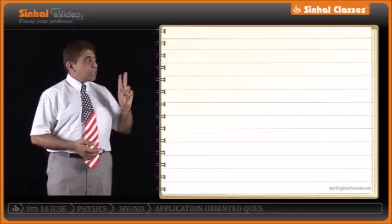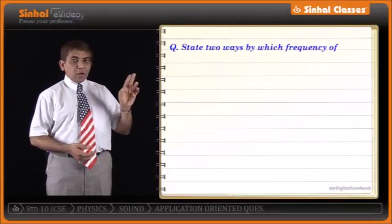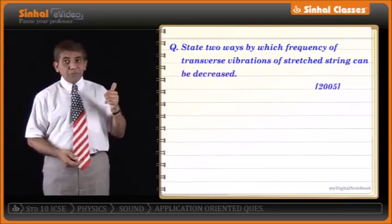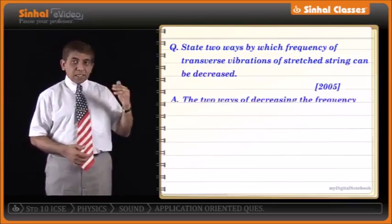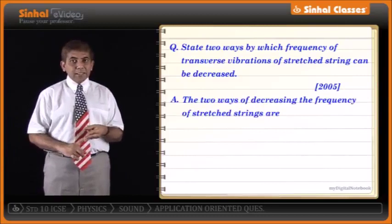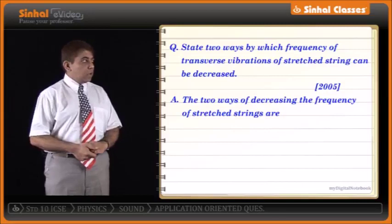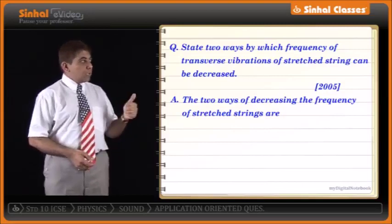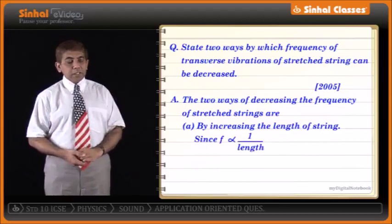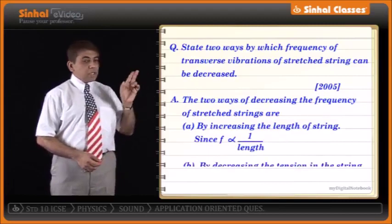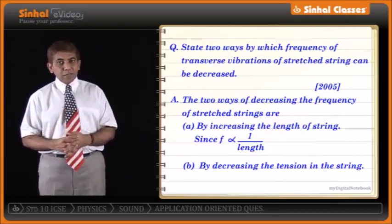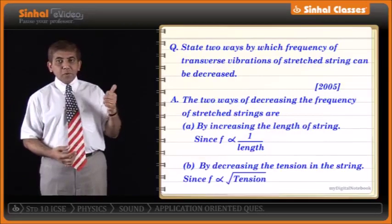State two ways by which the frequency of transverse vibration in a straight string can be decreased. From the laws of vibrating strings, frequency depends on length, tension, and linear density. The two ways to decrease frequency are: first, by increasing the length of the string, since frequency is inversely proportional to length; and second, by decreasing the tension in the string, since frequency is directly proportional to the square root of tension.